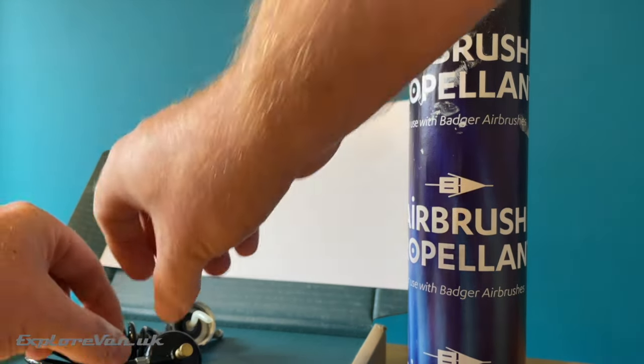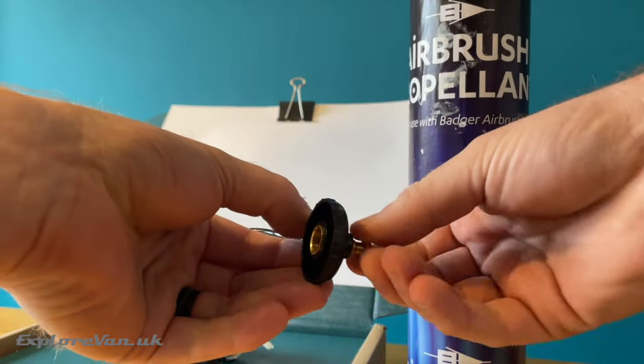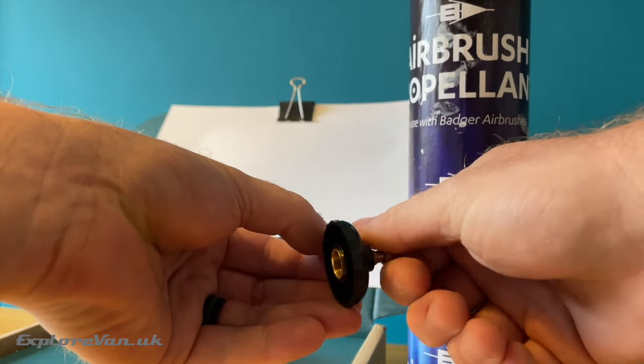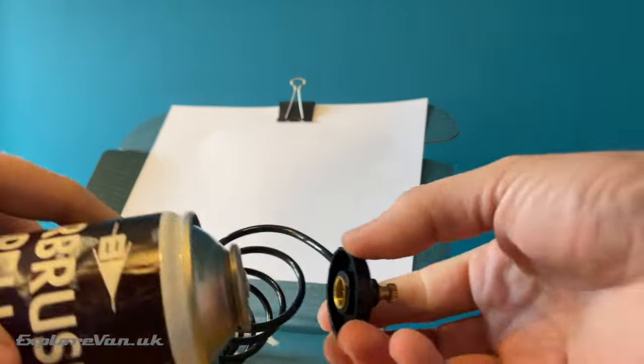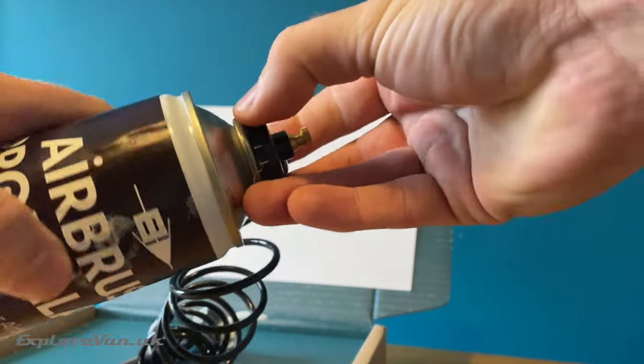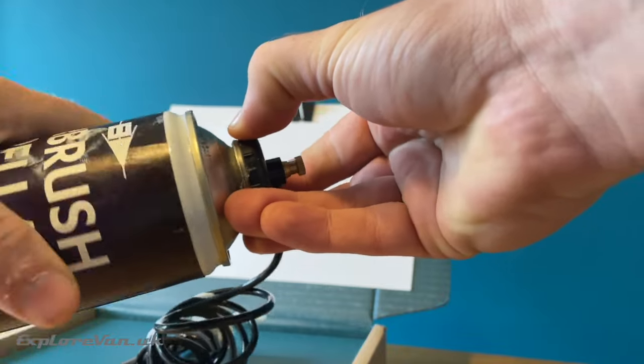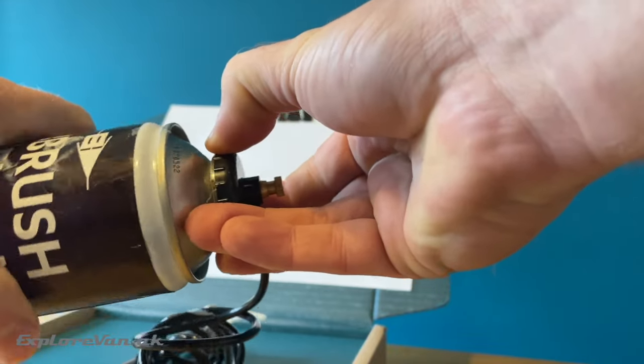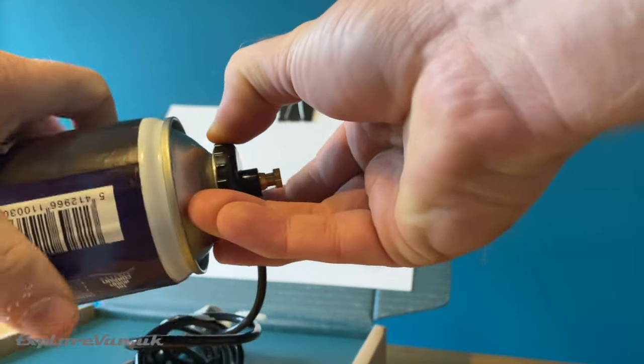Setup of the simplest option, costing around £10 for the airbrush and £10 for the propellant, was simple. Just connect up the aerosol to the brush. Obviously you have a finite amount of air, and we found it did lose pressure as the can got cold, so you then had to wait for it to warm up, which did become quite frustrating.